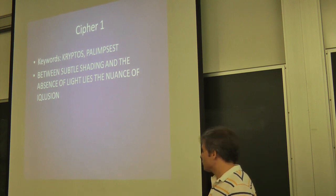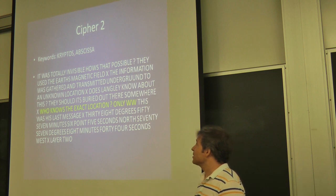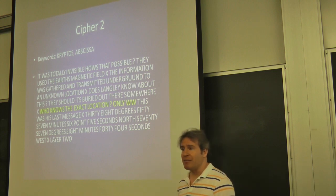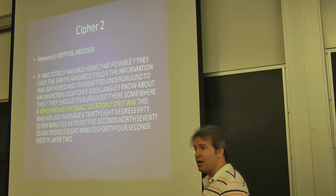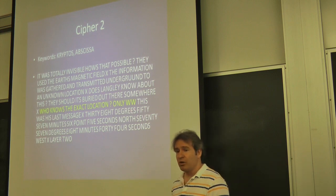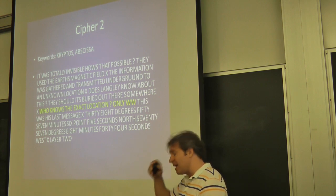Anyway, so there's the first decipherment. And the second piece, the key was abscissa. And here's the decipherment. Now, it contains who knows the exact location, only WW, which referred to William Webster of the CIA. Now, the artist, Sanborn, got very angry when Dan Brown incorporated this into one of his novels, flipped it upside down, and it had WW stand for Mary Magdalene.